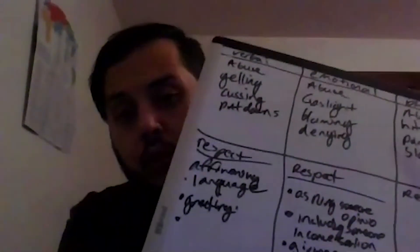Emotional respect could be asking someone's opinion, including someone in a conversation, or giving someone space. Those are examples of emotional respect.